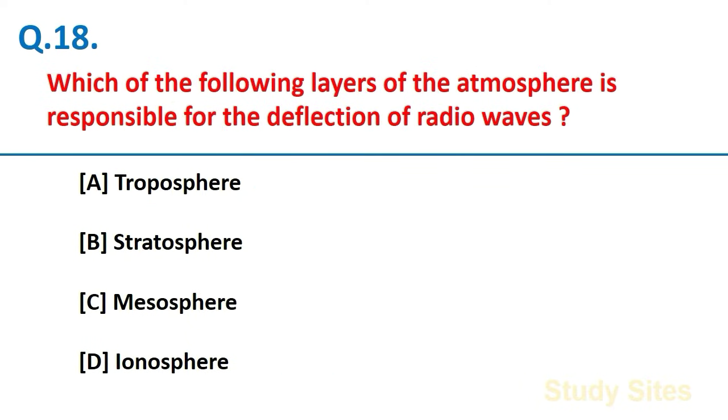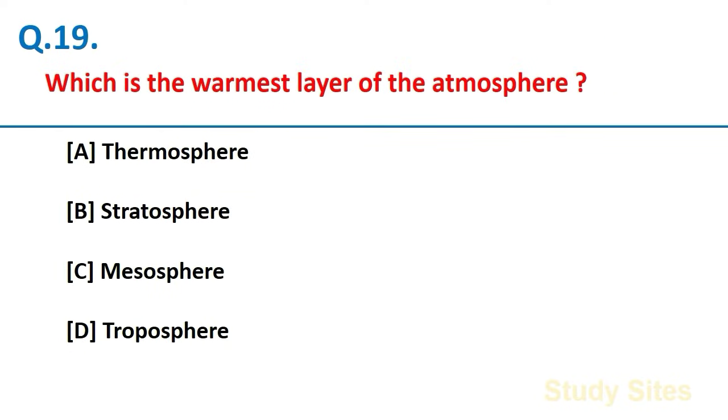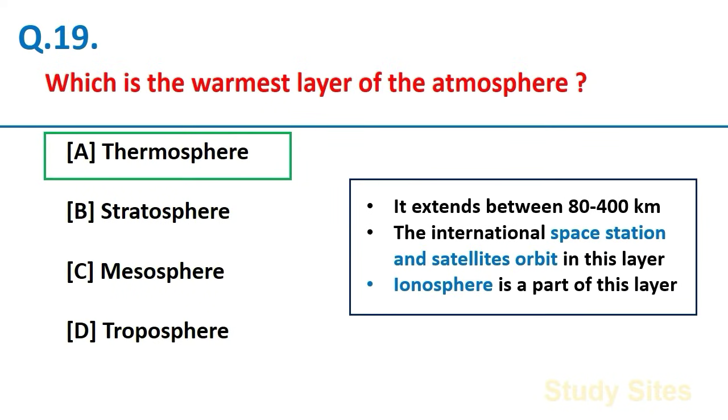Which of the following layers of the atmosphere is responsible for the deflection of radio waves? Ionosphere. Which is the warmest layer of the atmosphere? Thermosphere. Thermosphere extends between 80 to 400 km, the international space station and satellites orbit in this layer, and ionosphere is a part of this layer.